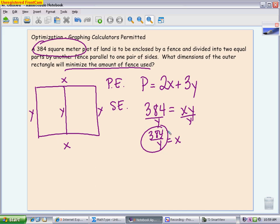I'm going to take this value and put it into the equation where you see an X. So my primary equation now is 2 times 384 over Y plus 3Y, or in other words, 768 over Y plus 3Y. Once you get to the point where your primary equation has been simplified - meaning you've done any distributing, squaring, combining like terms, and it's all in one variable - you're ready to derive it.